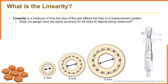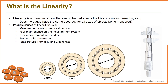We would like to have the same bias for all different diameters of ball bearing — the same for 2 mm, 4 mm, and 6 mm ball bearings. There are some possible causes of linearity: for example, the measurement system needs calibration, poor maintenance on the measurement system, poor measurement system design, a problem with the master sample, or environmental factors such as temperature, humidity, and cleanliness of the environment or the measurement system.